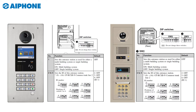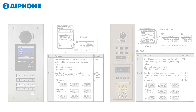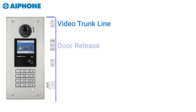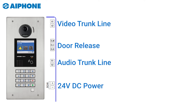Once the entry panel IDs are set, let's take a close look at the connectors on the back of the unit. The most important connectors are on the top: A1 and A2, used for your video trunk line termination. Then you have ELM, ELC, and ELB for your lock connection. Then R1 and R2 for your audio trunk termination, and plus and minus DC volts for your power.